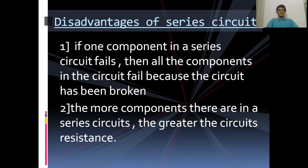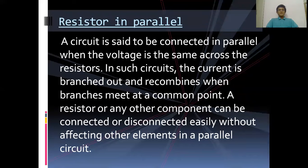A circuit is said to be connected in parallel when the voltage is the same across the resistors. In such circuits, the current branches out and recombines when branches meet at a common point. A resistor or any other component can be connected or disconnected easily without affecting other elements in a parallel circuit.